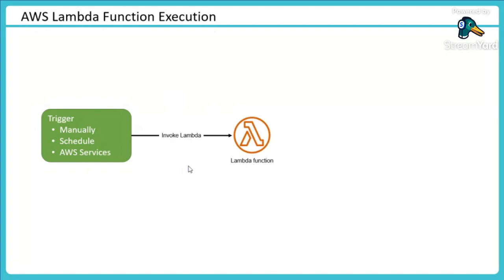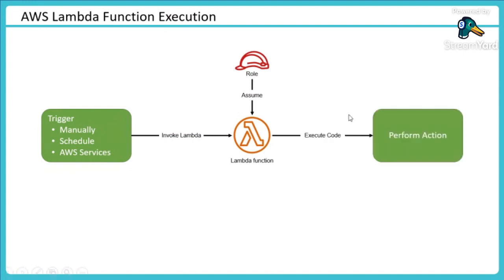Once a trigger is done, Lambda may assume a role — a mechanism to give permission to my Lambda. So if I want this Lambda to talk to DynamoDB, S3, or some other services, I have to enable permission on that, and that is done by a role. That role would be assumed by the Lambda function. I would associate a role, and through these credentials it would be able to talk to other services and perform actions, which could be within AWS or outside.